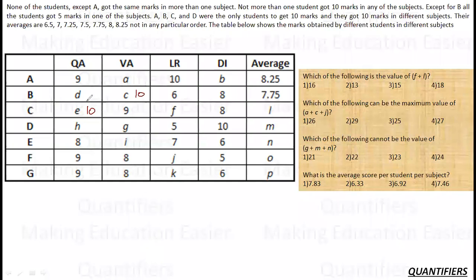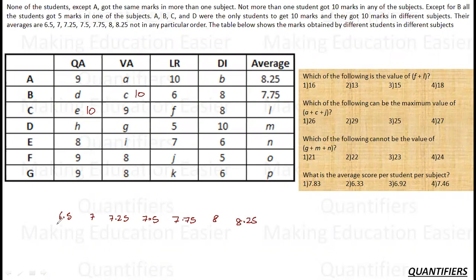Now their averages are 6.5, 7, 7.25, 7.5, 7.75, 8, and 8.25 in random order. Converting to totals over 4 subjects: 26, 28, 29, 30, 31, 32, and 33 are the totals received by them. An average of 8.25 gives a score of 33.